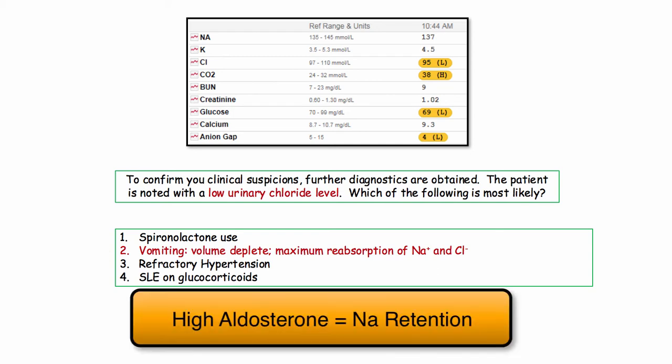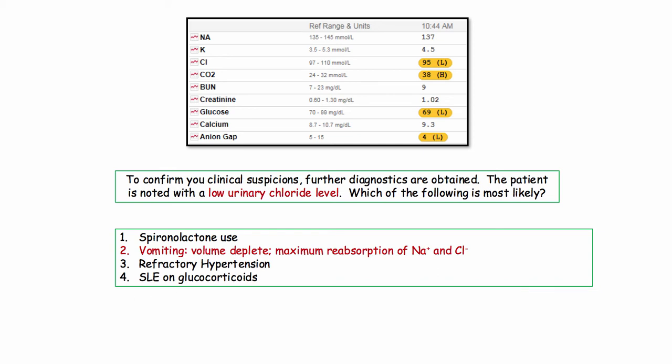This leads to maximal absorption of sodium. Sodium, a cation, must be absorbed with an anion. In the principal cell, that anion will be chloride. So what's the result? In volume deplete states, there will be a low urinary chloride. If you can hold on to this concept, you are in good shape.